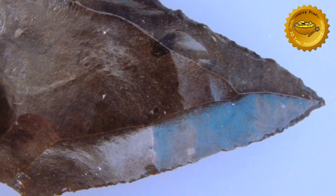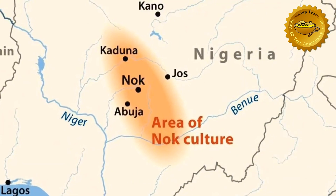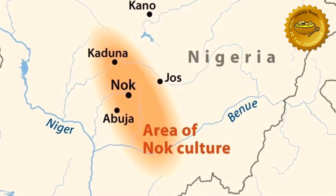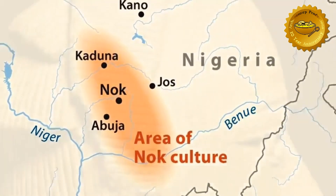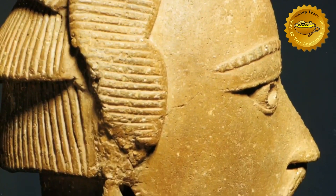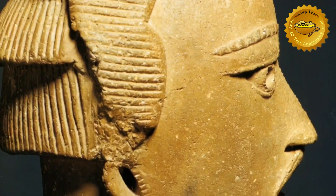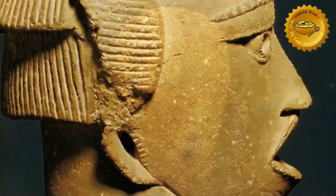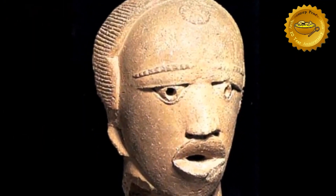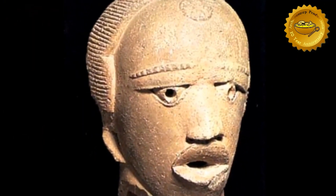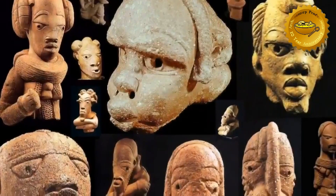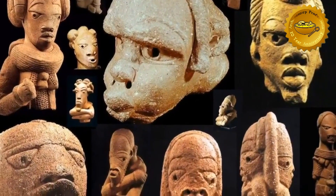The so-called Nok culture is one of West Africa's earliest known civilizations. In 1943, British archaeologist Bernard Fagg came into possession of a terracotta head from the region. He employed thermoluminescence to date the head to around 500 BC, thus giving a date to what had hitherto been a fairly mysterious culture.